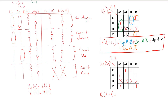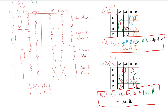Now let's write the equation for BT+1. Let's group the ones in the BT+1 Karnaugh map. Here is the first group, here is the second group, and this is the third group. By using three groups I was able to cover all the ones. Now let's write the equation. Here is our equation for BT+1.